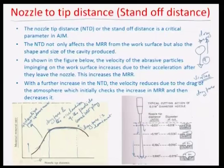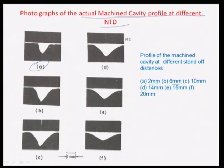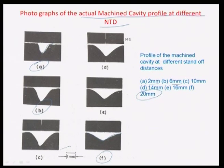A greater nozzle tip distance also affects the sharpness/resolution of the machined feature. At shorter NTD, the beam spread is less, giving a sharper feature; at greater NTD, the beam spreads more, producing a wider, less defined feature. Experimental photographs show machined cavities at NTDs of 2 mm, 6 mm, and 20 mm — clearly demonstrating how the spread of the cut profile increases with nozzle tip distance. A 1 mm scale bar is shown in the photographs.